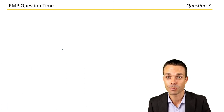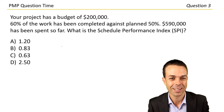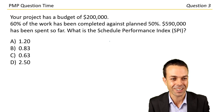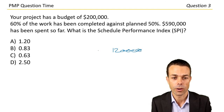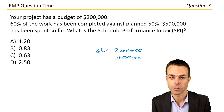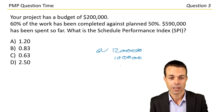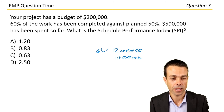Question three. Your project has a budget of $200,000 — lots of mathematics again. 60% of the work has been completed, so $120,000 is our earned value. Planned was 50%, so $100,000 is our planned value. $590,000 has been spent so far — so we're way over budget. That's our actual cost. What is the schedule performance index?